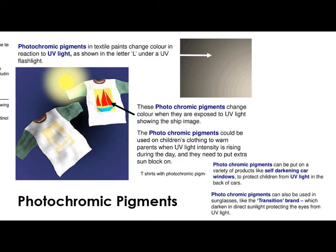Other uses include self-darkening car windows to protect children from UV light in the back of cars. They're also used on children's clothing — when the UV light is too intense, something might light up instructing the parent to put more sunblock on. Sometimes it's just used decoratively, so when the sun comes out, a fun pattern appears on a piece of clothing. Photochromic pigments react to UV light.